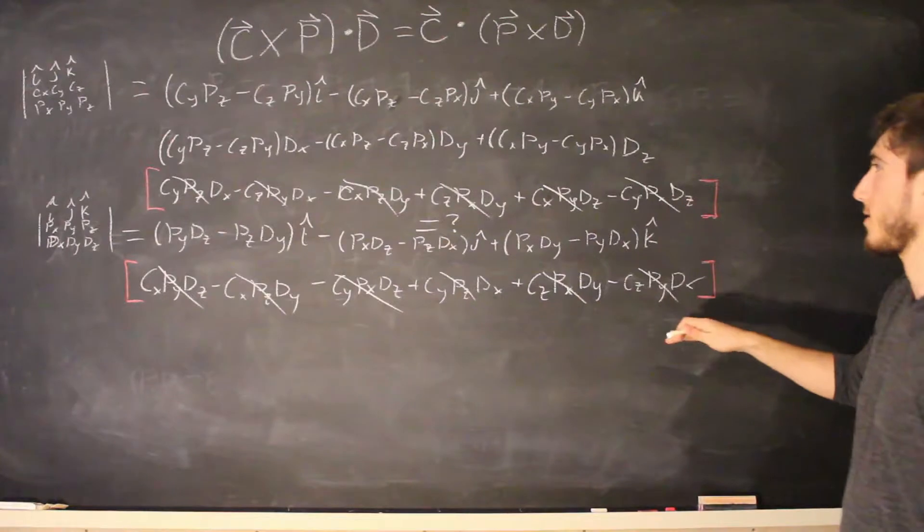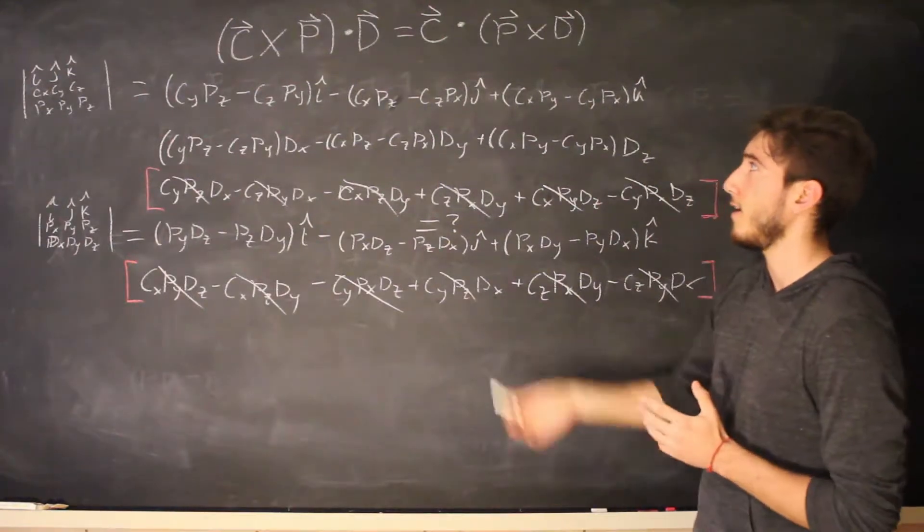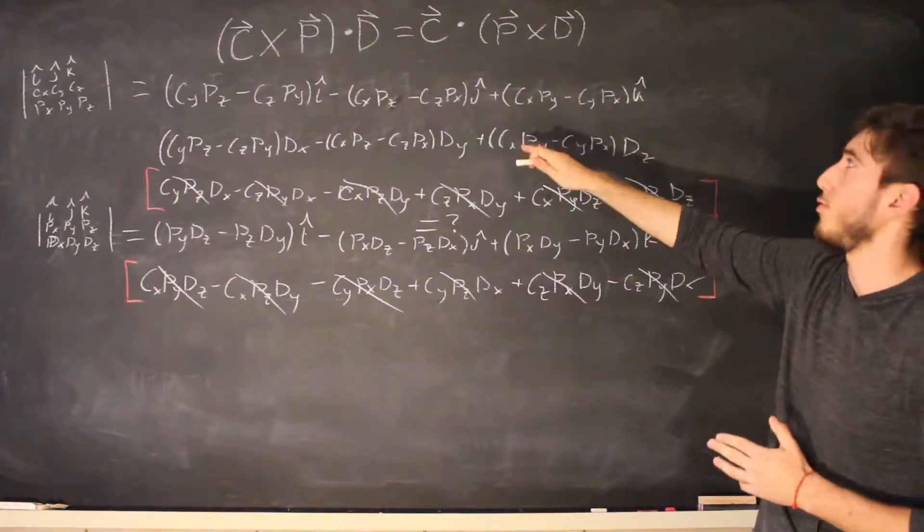there's no terms left on either side so we have proved that C cross P dot D is equal to C dot P cross D